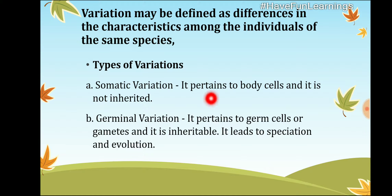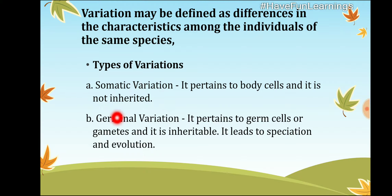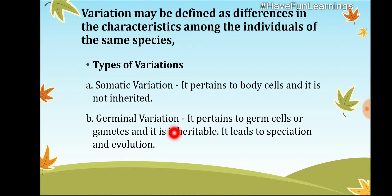Somatic variation pertains to body cells and is not inherited. Germinal variation pertains to germ cells or gametes and is inheritable — it is passed from generation to generation. Germinal variation leads to speciation and evolution.